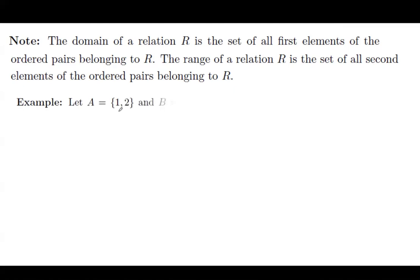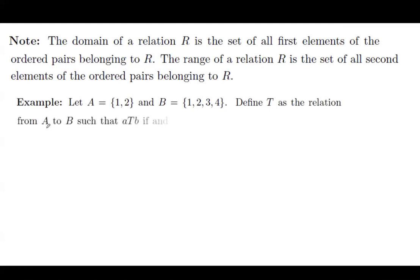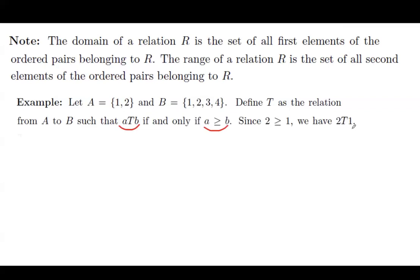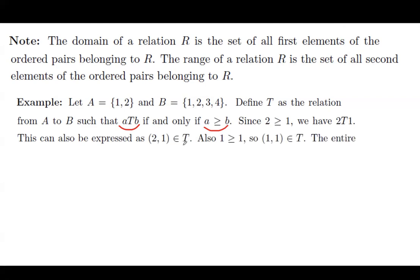For example, suppose A is the set including 1 and 2, and B is the set including 1, 2, 3, 4. We define T as a relation from set A to set B such that a is in relation with b if and only if a is greater than or equal to b. Since 2 ≥ 1, the ordered pair (2, 1) belongs to T. Also, 1 ≥ 1, so the ordered pair (1, 1) belongs to relation T.